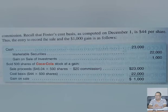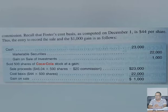We sold 500 shares at $46.05, multiply by 500, then subtract $20 brokerage charges — net cash received is $23,000. We purchased at $44 × 500 shares = $22,000. The difference of $1,000 is the gain. Entry: Cash debit $23,000; Marketable Securities credit $22,000 (at cost); Gain on Sale of Investment credit $1,000.